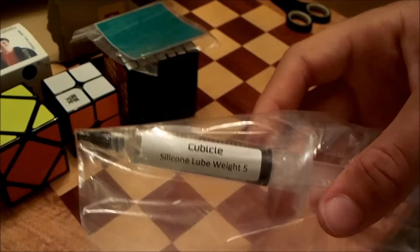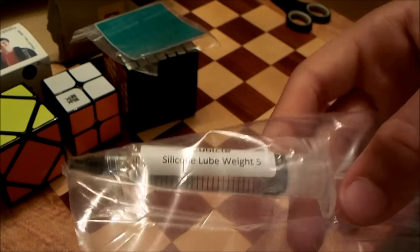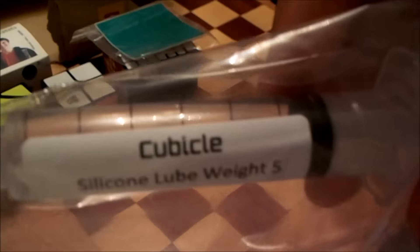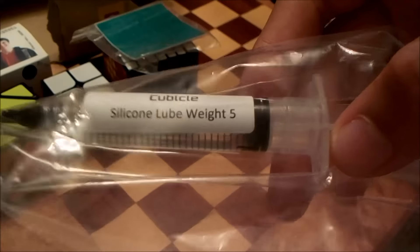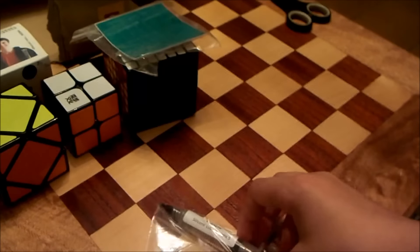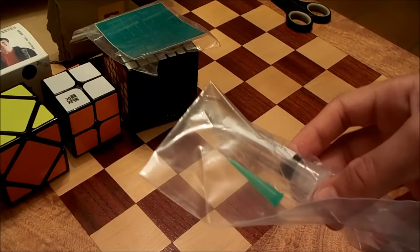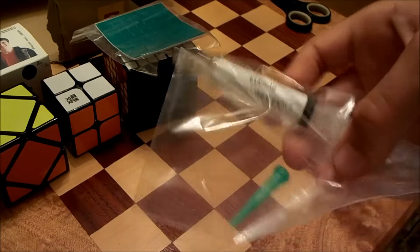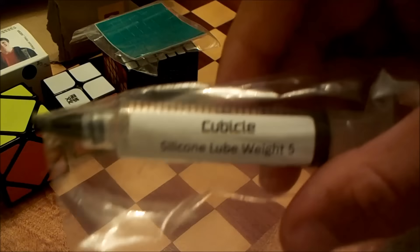I've got some weight 5 silicone lube. And right here, if you can see, it says it's from the cubicle. Which is weird. I got this from speedcube.com.au. So probably what happened is, speedcube bought a bunch from the cubicle and then started selling it here. But that's pretty weird. I didn't buy it from the cubicle.